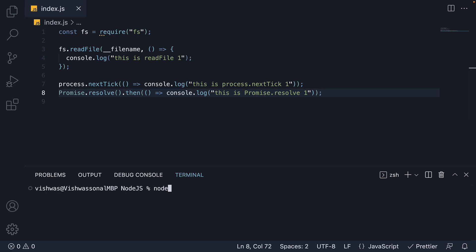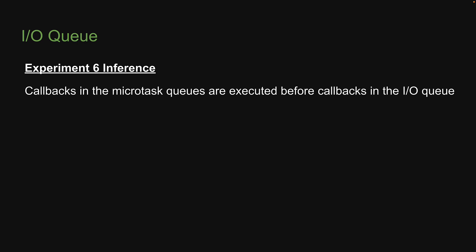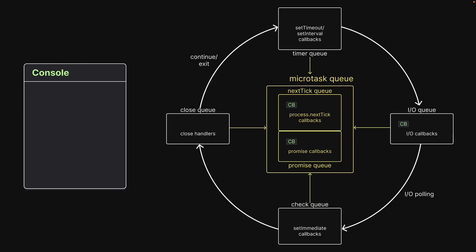If I run node index, you can see the nextTick log statement first, followed by promise resolve, followed by readFile. From this, we can infer callbacks in the microtask queues are executed before callbacks in the IO queue. When the call stack executes all statements in our code snippet, we end up with one callback in the nextTick queue, one in the promise queue, and one in the IO queue. There is no further code to execute and control enters the event loop, where the nextTick queue gets top priority, followed by the promise queue, which is then followed by the IO queue.